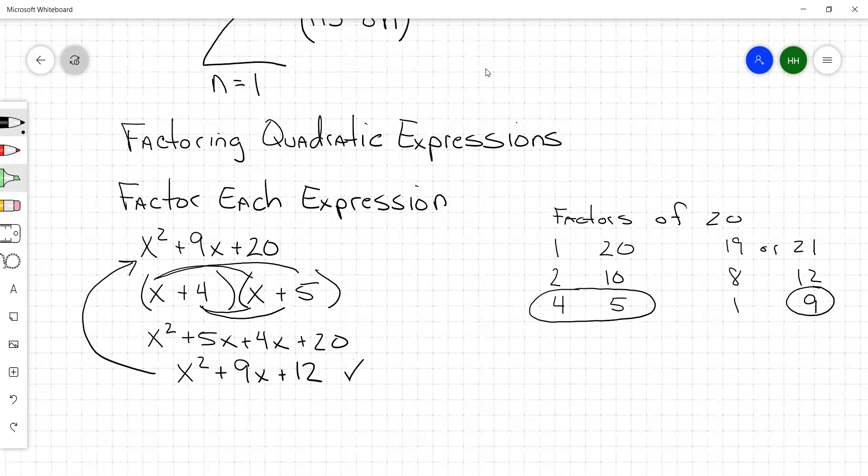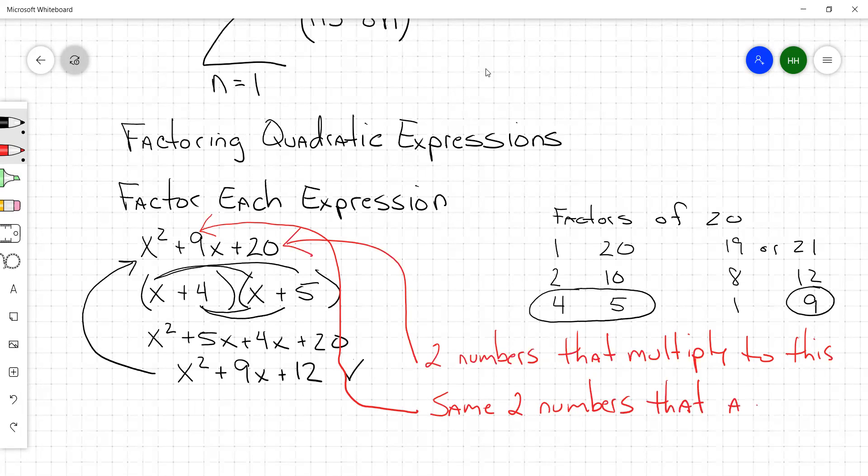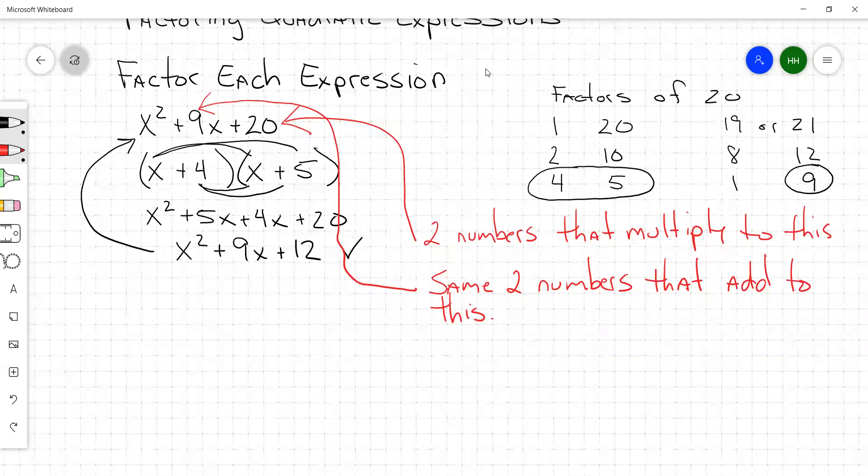The key is two numbers that multiply to this, which is whatever's here. And then right here, same two numbers that add to this. They got to add to the middle. They got to add to the middle and they got to multiply to the end.